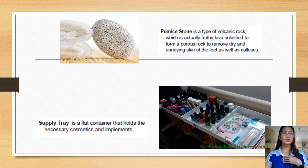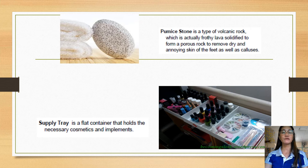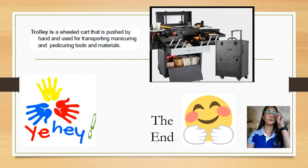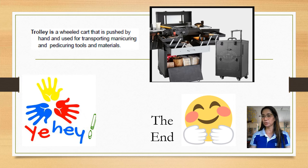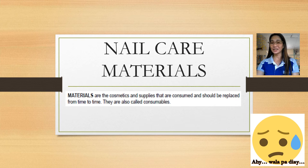The pumice stone is a type of volcanic rock — solidified lava — forming a porous rock used to remove dry skin and calluses from the feet. The supply tray is a flat container that holds the necessary cosmetics and implements such as nail polish and other materials. The trolley is a wheeled cart pushed by hand for transporting manicure and pedicuring tools and materials, commonly used in salons.